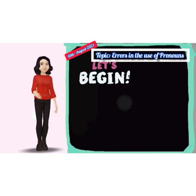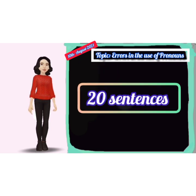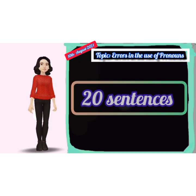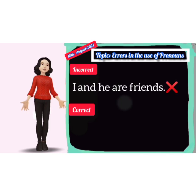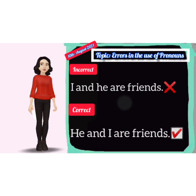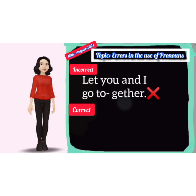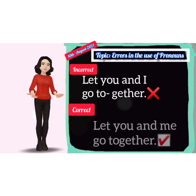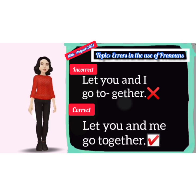So let's begin. Today we will correct 20 incorrect sentences. First one: incorrect — 'I and he are friends.' Correct — 'He and I are friends.' Second: incorrect — 'Let you and I go together.' Correct — 'Let you and me go together.'